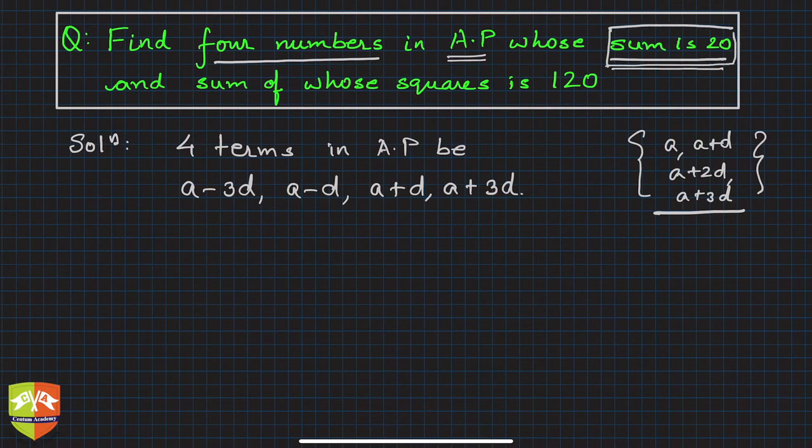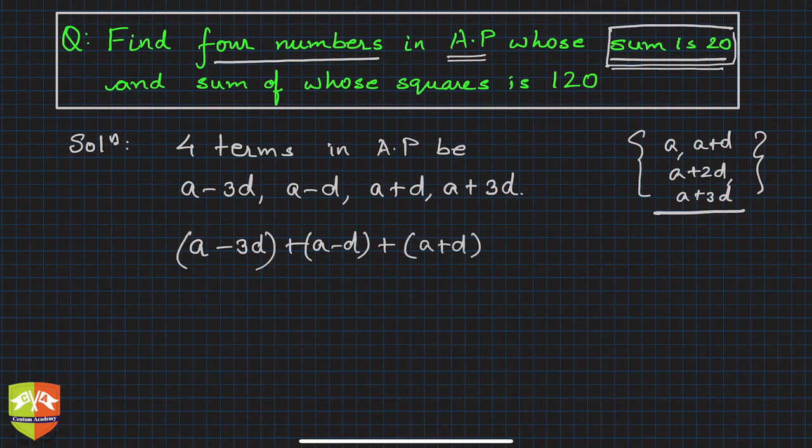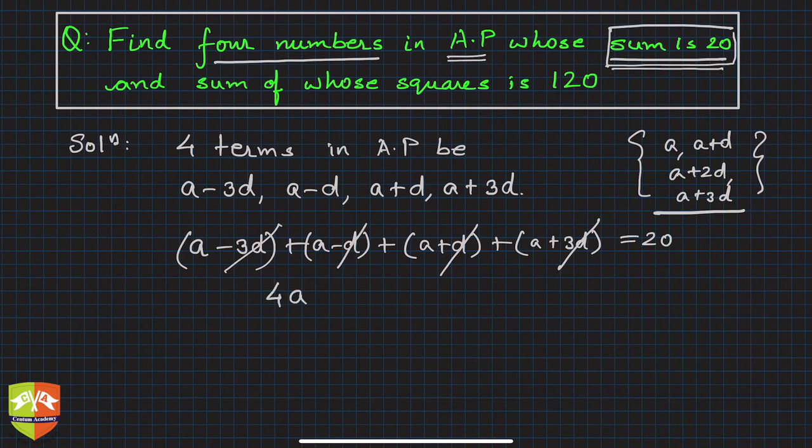Sum is 20, so a minus 3d plus a minus d plus a plus d plus a plus 3d equals 20. Now you will see the advantage of taking it as a minus 3d, a minus d, a plus d, and a plus 3d. If you look closely, all the d terms will get cancelled, leaving only 4a behind, and this is 20. So immediately you get a value of a which is 5.